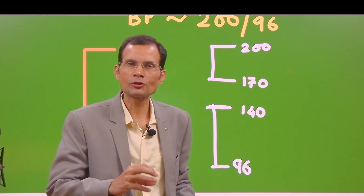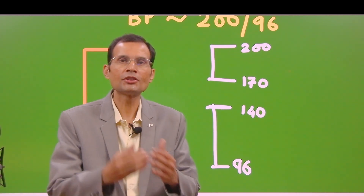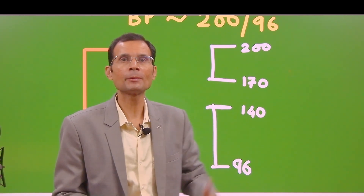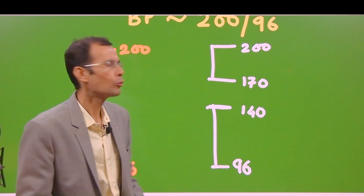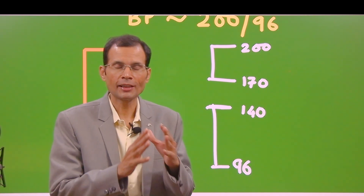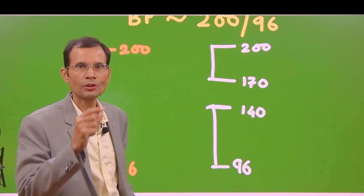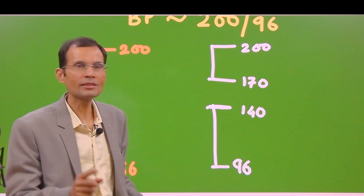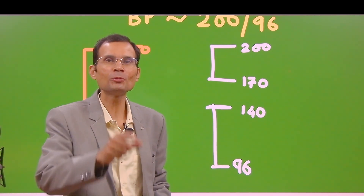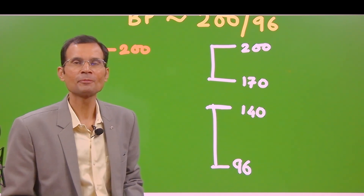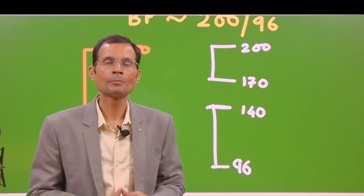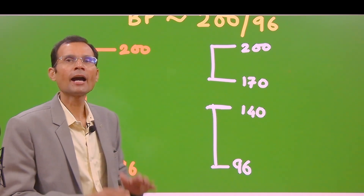Assume the clinician is recording the blood pressure for the first time and has not taken the BP by palpatory method. He goes straight for the auscultatory method without knowing how high to raise the pressure. He raises the pressure to only 160 mmHg and starts lowering it — placing himself within the silent gap. So the first sound will appear at 140 and disappear at 96. He records 140/96, but the actual pressure is 200/96. This is the most likely error: low systolic but normal diastolic.